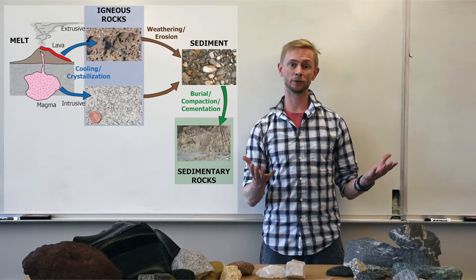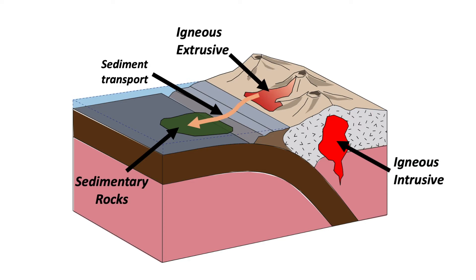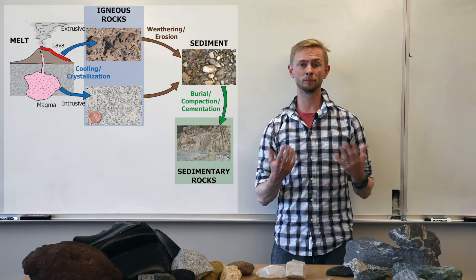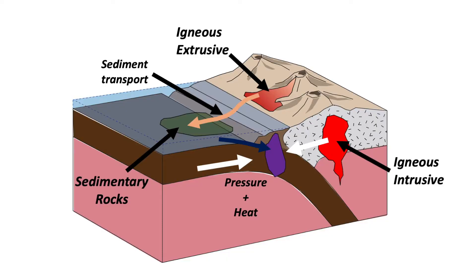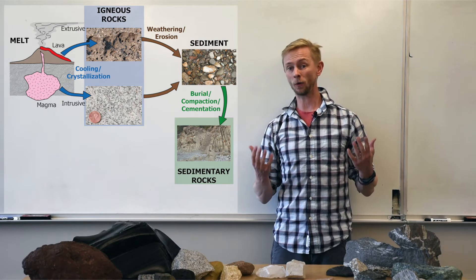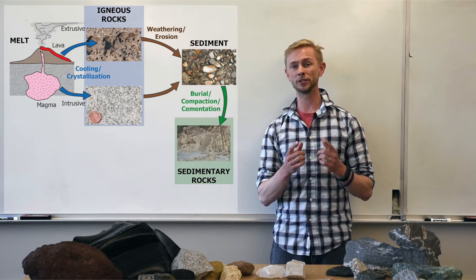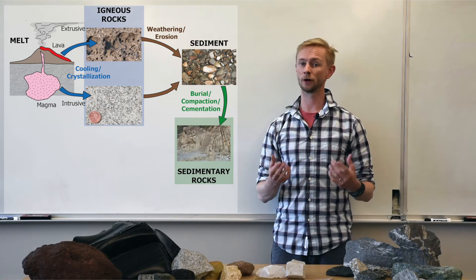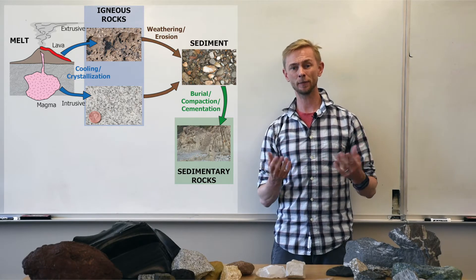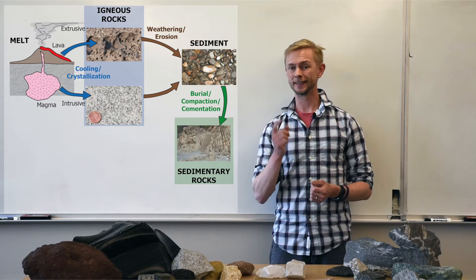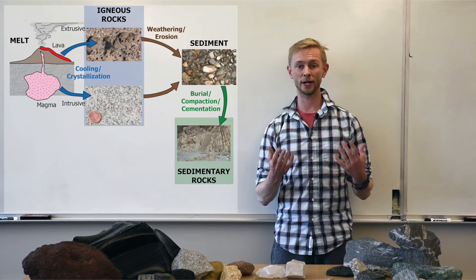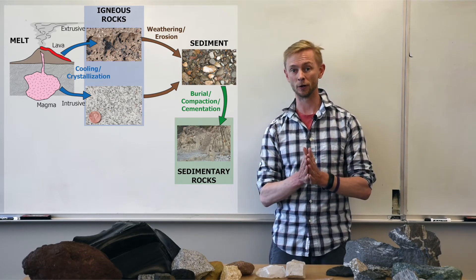Now let's suppose that we take the sedimentary rock and continue to bury it deeper and deeper and deeper within the crust, and maybe subject it to some pretty intense pressures associated with a tectonic convergent boundary. At greater pressures and or temperatures within the crust, the mineral assemblage in the rock will change. Many minerals that form at or near the Earth's surface are not stable at conditions present deep within the crust. These intense pressure and temperature conditions will cause the minerals to change, to metamorphose into new minerals.